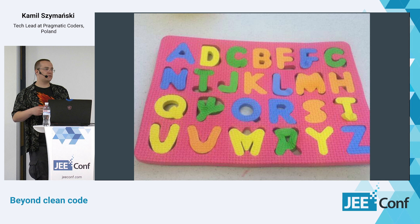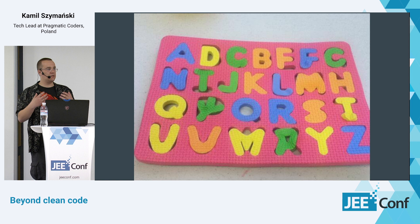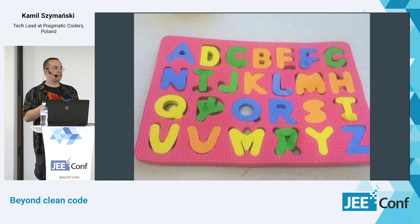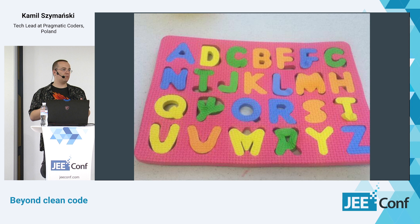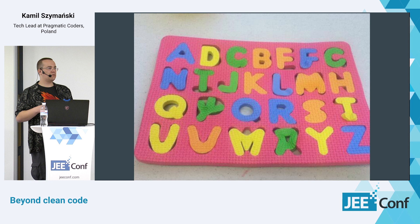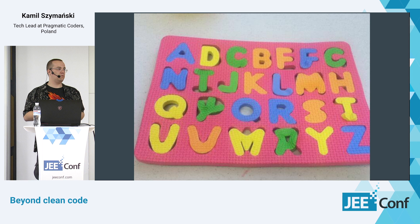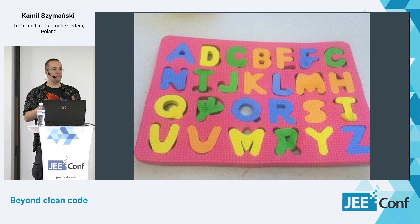DRY is all about each piece of knowledge having just a single representation in the code base — and it turns into 'lack of code duplication.' Code duplication is okay. It's all about not duplicating our knowledge. If we ask about the single responsibility principle, it turns out this is all about a component doing just one thing — not as it was supposed to be, that the component should have only one reason to change, only a single source of requirements.